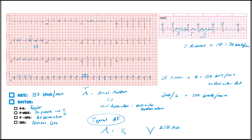This is typical atrial flutter — the most common type. In typical atrial flutter, the sawtooth waves in V1 are usually upright, and they point downward in leads 2, 3, and AVF. Here the waves point down in lead 2 and point up in V1 — that confirms typical atrial flutter. The most common ratio for atrial flutter is 2-to-1, meaning every two atrial depolarizations cause one ventricular depolarization.